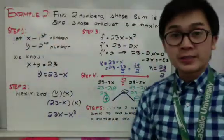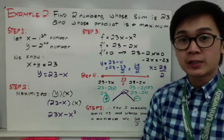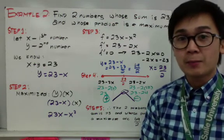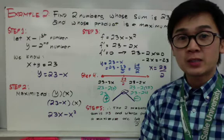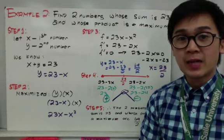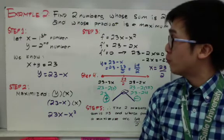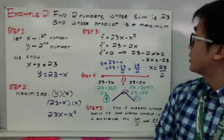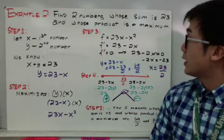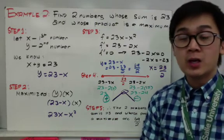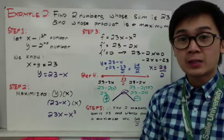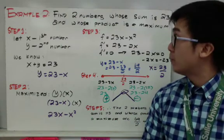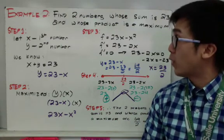Sa example number 2, similar siya doon sa example number 1, pero this time sana mas maintindihan nyo yung mga steps na ginamit natin. Yung problem natin will be to find the two numbers whose sum is 23 and whose product is a maximum. Kailangan nating mag-gawa ng equation based doon sa question.